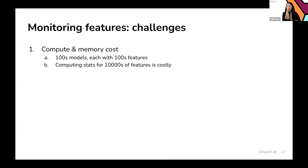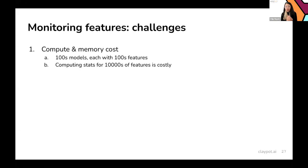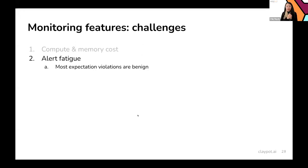Monitoring features has a lot of challenges. First is compute and memory cost: companies may have hundreds of models in production, each with hundreds of features. If you have 100 models each with 100 features, that's 10,000 features — constantly computing statistics for all of them can be very costly and slow. Another challenge is alert fatigue: with many features, some will naturally change, but most changes are benign. Sending alerts to a data scientist every time a feature changes leads to a lot of false alarms and alert fatigue.